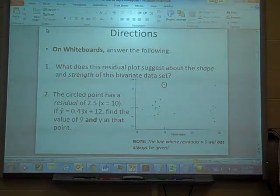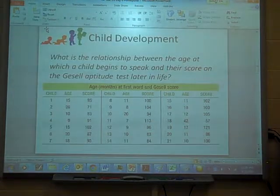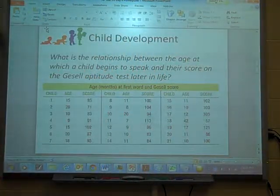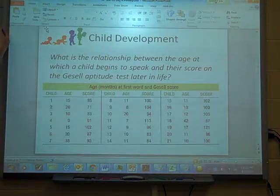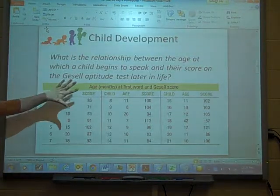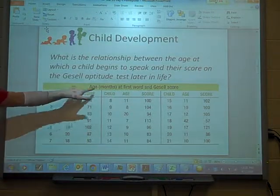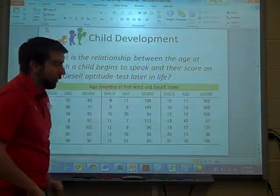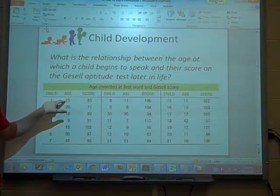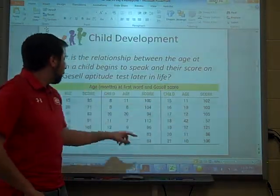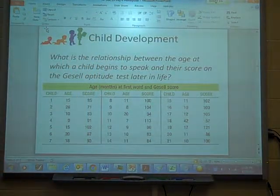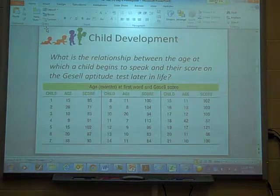Alright, so that's yesterday. I want to go over that and make sure you guys are good with that. So my question of the day here is going to be, what is the relationship between the age at which a child begins to speak and the score on the Gesell aptitude test? This was from an example we had a little while ago. Here's the actual data set. Now, I know it's a child. This is not data. This is just a child number. So don't put this in a calculator. We have the age. This is, by the way, age in months.